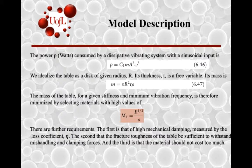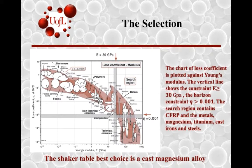Other important requirements include high mechanical damping, characterized by the loss coefficient, and sufficient fracture toughness to handle clamping forces. The material also can't cost too much, and it has to be light, since many architecture classes use shaker tables. With a constraint of Young's modulus above 30 gigapascals and a loss coefficient above 0.001, you get the search region shown in the upper portion of the chart.